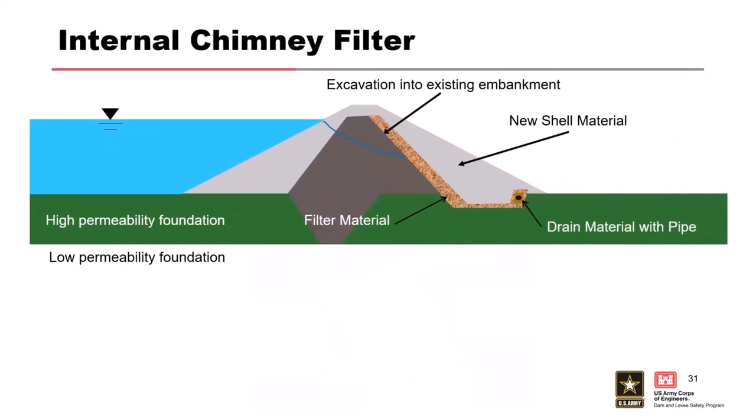An internal chimney filter is much more invasive — you're taking out the downstream shell to put a filter in against the core, then replacing the fill material, blanket drain, and toe drain. This is something where you'd probably need to lower or drain the reservoir, because you're really getting into the embankment. Think about your risks, your consequences, and understand the stability of the structure without that downstream shell.